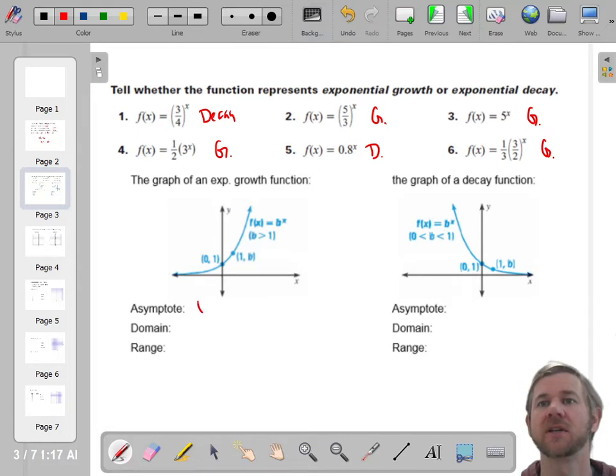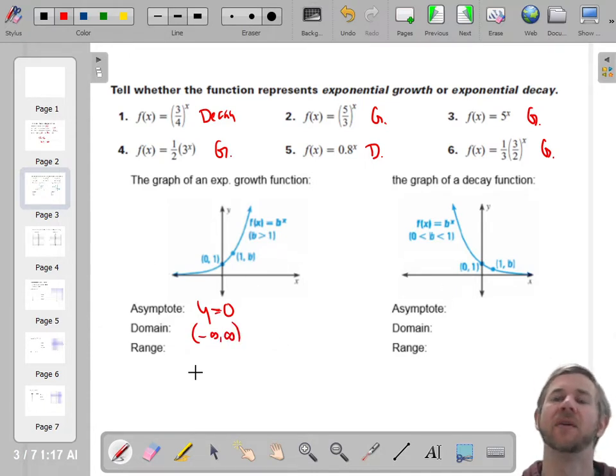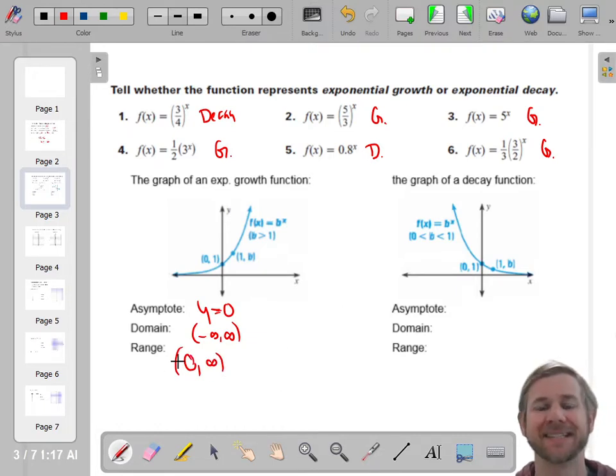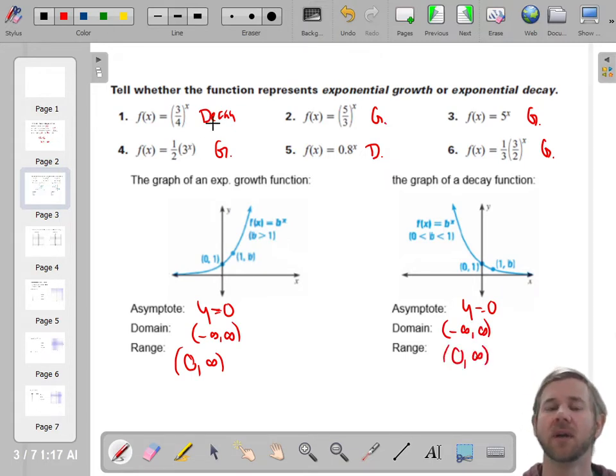For an exponential function, the asymptote will be the x-axis. The domain will be all real numbers. It goes forever to the left and forever to the right. And the range will be whatever the asymptote is up to infinity. And those are both parentheses because it doesn't actually hit the asymptote. The asymptote is the same thing, negative infinity to infinity, and the range is still 0 to infinity. Cool. So we're going to actually graph these things, and that's where we need to land.